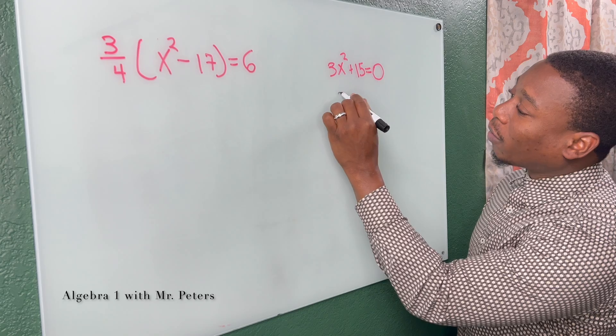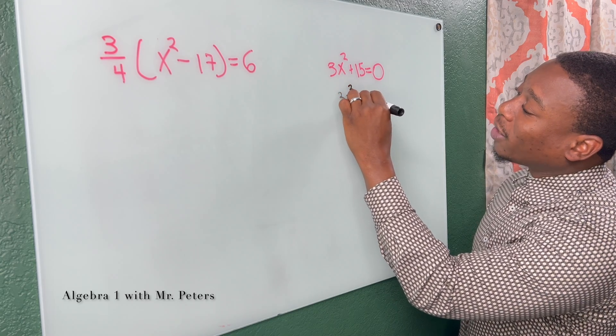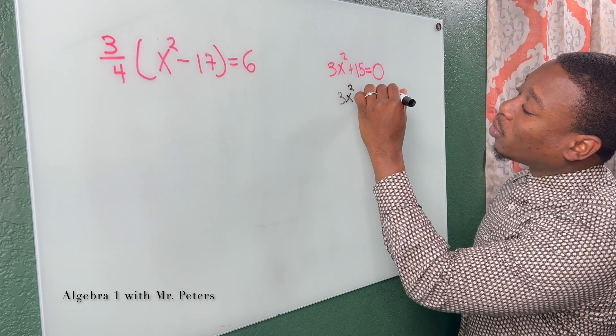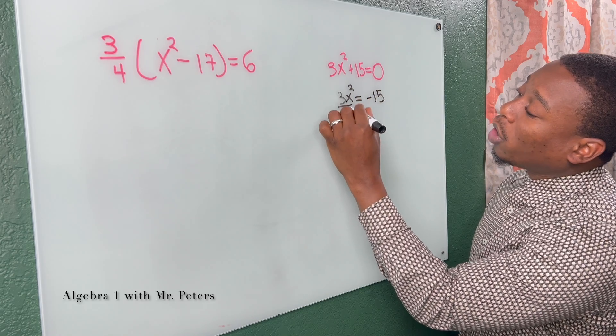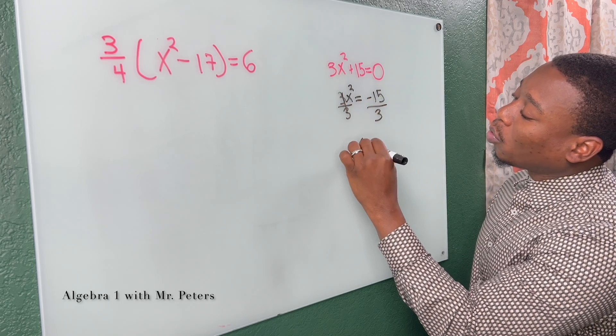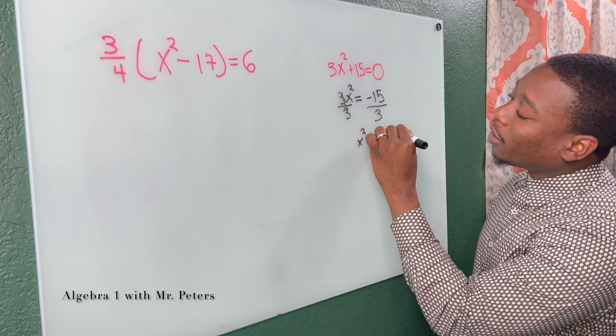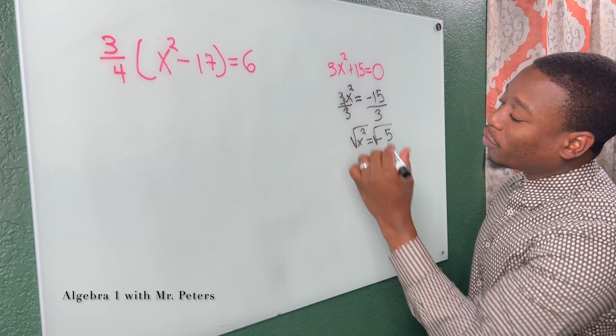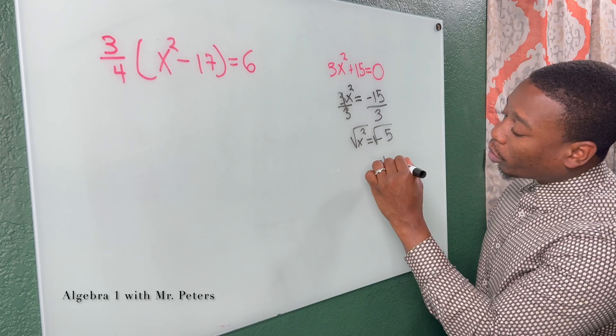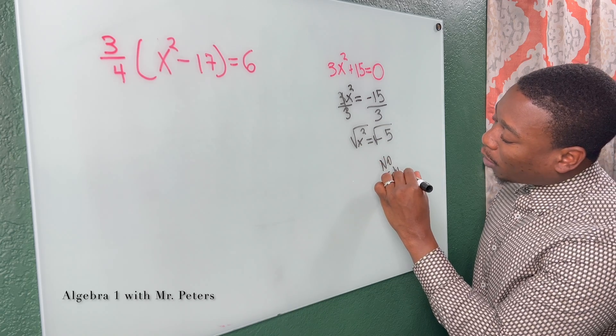So let's say we focus here. Getting x squared by itself, 3x squared is equal to negative 15. When we divide by 3, we get x squared is equal to negative 5. We know we can't take the square root of a negative number. So we already know this is a no solution problem.